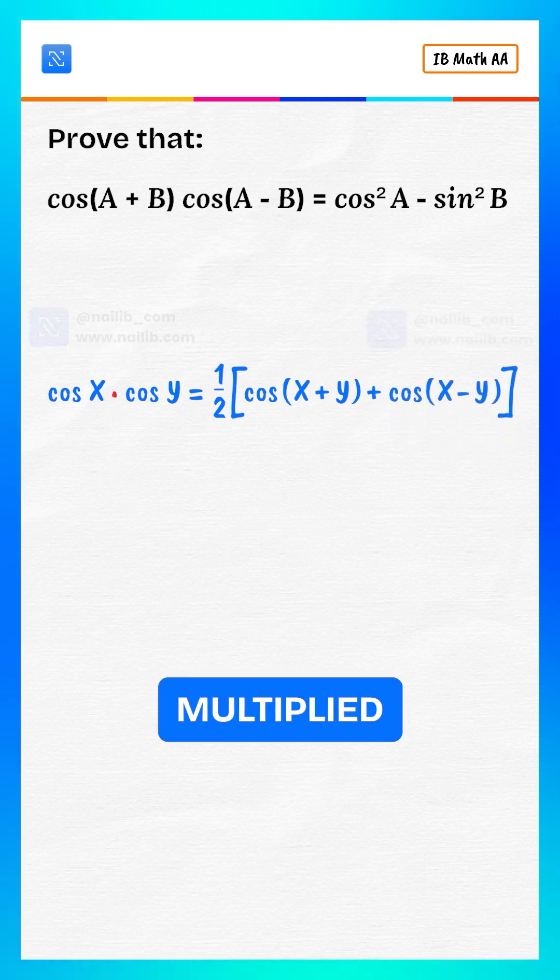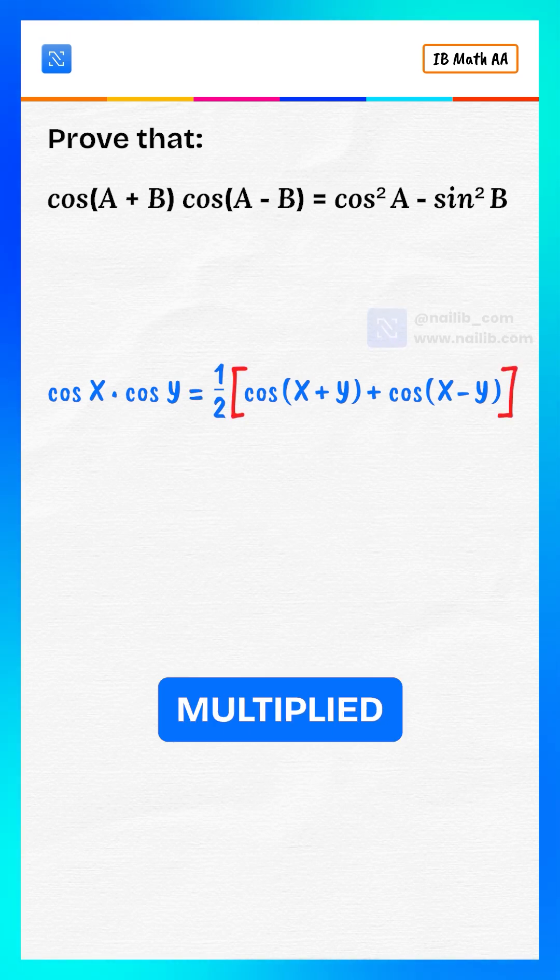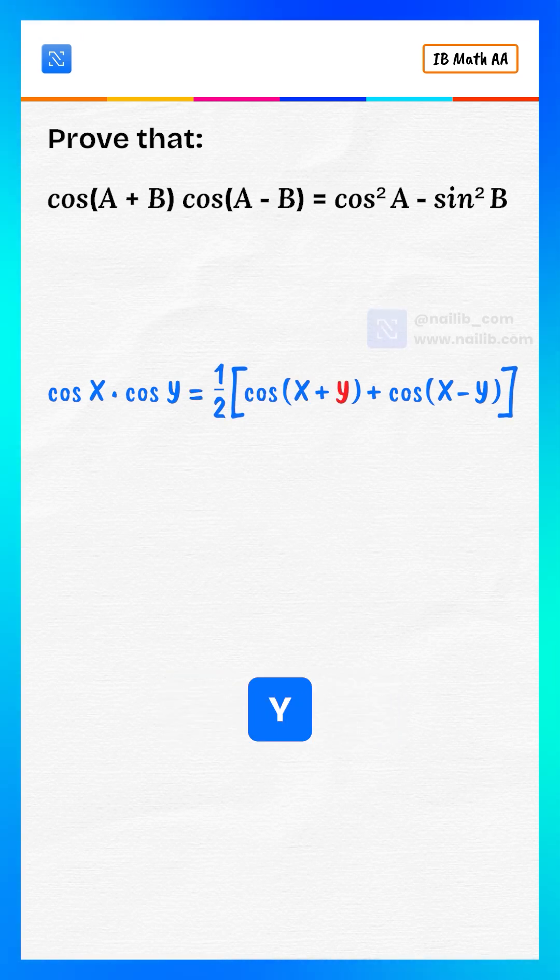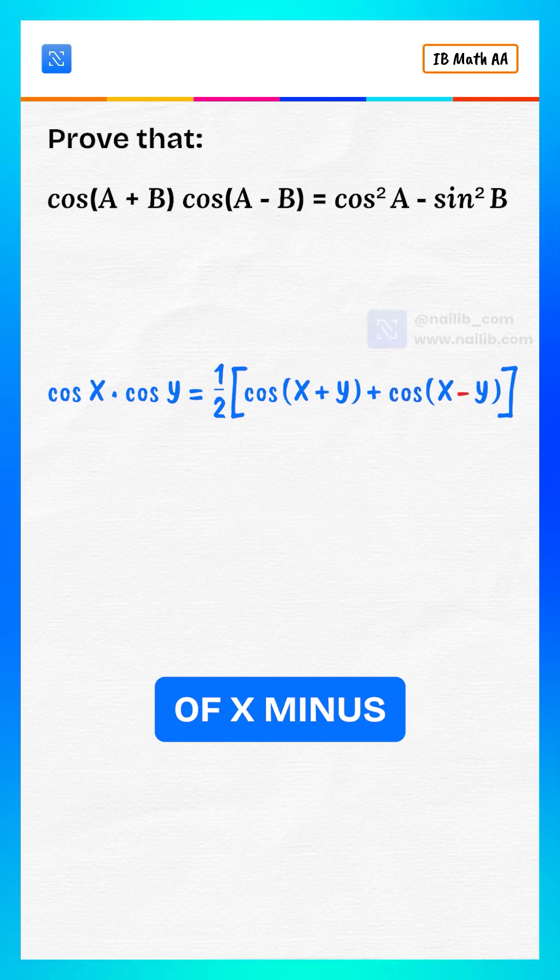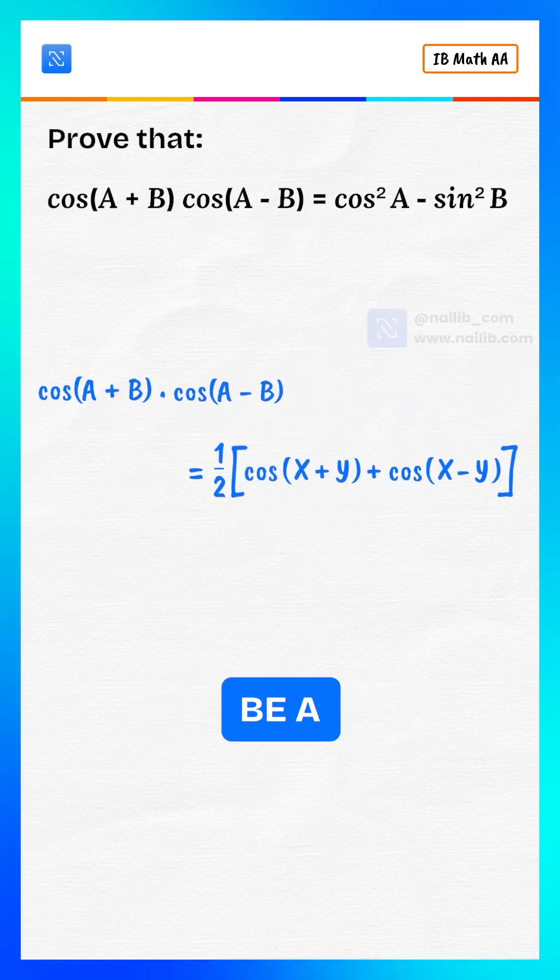Cosine x multiplied by cosine y equals one divided by two multiplied by cosine of x plus y plus cosine of x minus y. Let x be A plus B and y be A minus B.